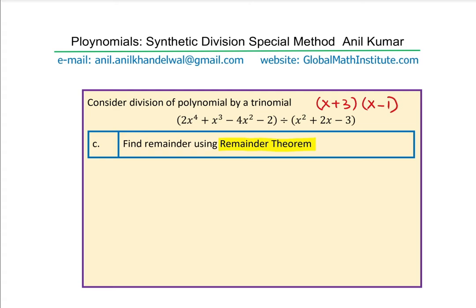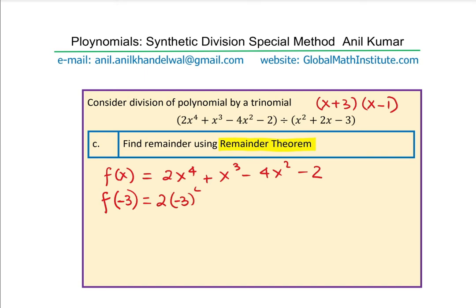So, when we divide f(x) = 2x⁴ + x³ − 4x² − 2 by (x+3)(x−1), we can find the remainder when dividing by x plus 3 and also by x minus 1 individually. What is the value of f(−3)? That is 2 times (−3)⁴ plus (−3)³ minus 4 times (−3)² minus 2. Using the calculator, f(−3) = 97.